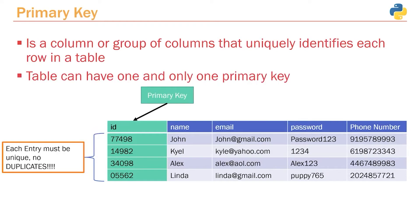When we create a table, we have to specify something called a primary key. A primary key is a column or group of columns that uniquely identifies each row in a table. We need to tell Postgres how it can uniquely identify each entry. We can only have one primary key per table — though it can span multiple columns, let's keep it simple and treat it as one column. A common approach is an ID column: the ID associated with John might be 77498, and that's how we uniquely identify each user. Each ID must be unique — no duplicates.